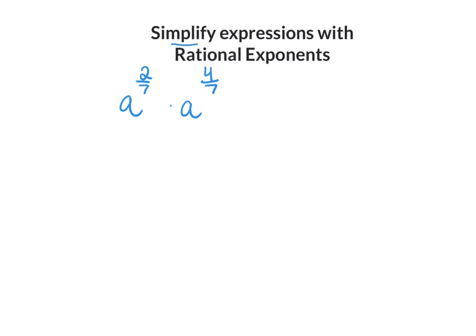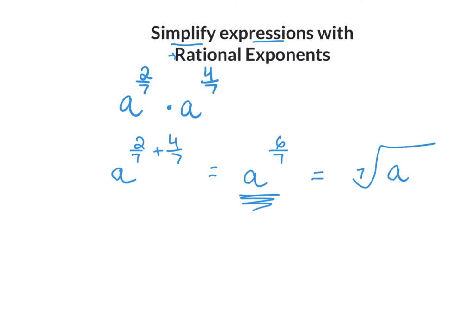Now we're simplifying expressions with rational exponents. We have a to the power of 2/7 times a to the power of 4/7. When multiplying powers with the same base, you add exponents, so this equals a to the power of 2/7 plus 4/7. The denominators are the same, so just add the numerators: a to the power of 6/7, which in radical form is the seventh root of a to the power of 6.